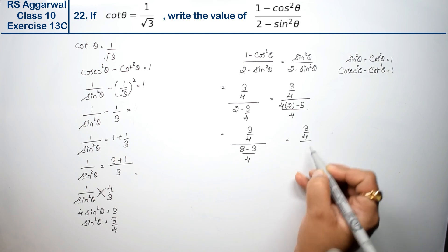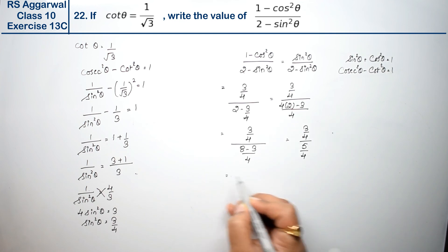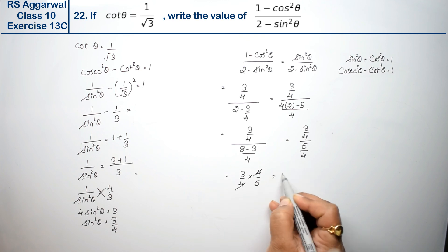3/4 divided by 5/4, which equals 3/4 × 4/5. So this equals 3/5, which is the answer.